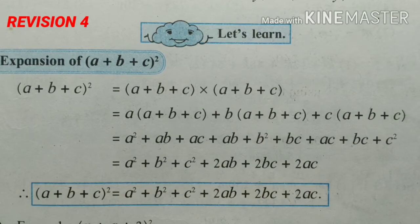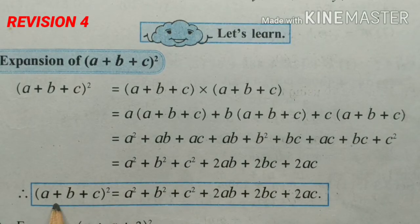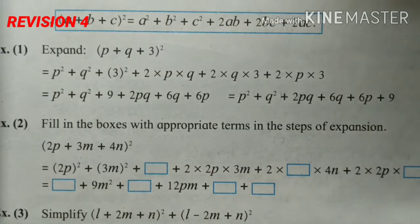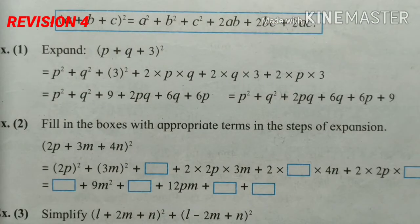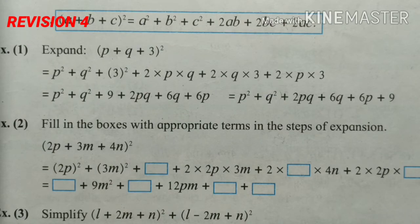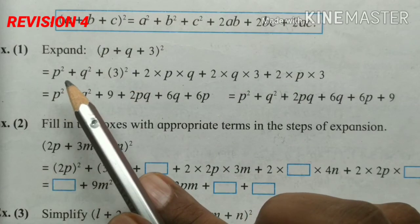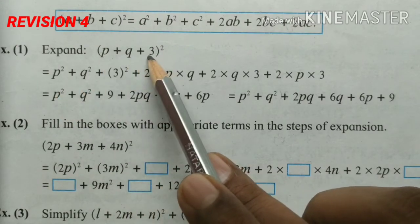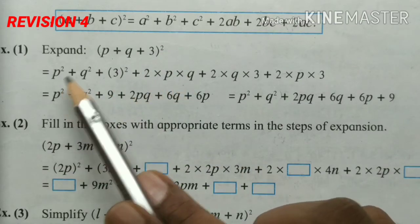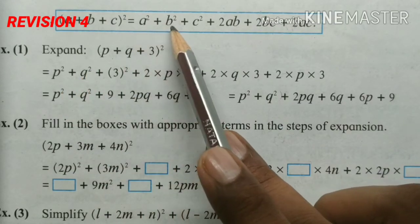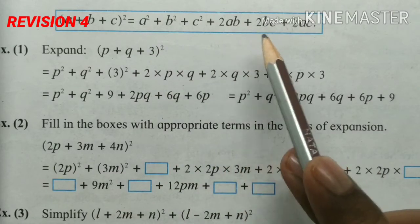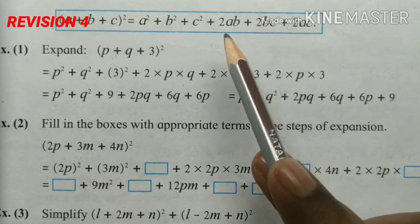Thus in this way we get the formula: expansion of (a + b + c) square. There are some formulas and examples solved in the book. In our video we solve some examples. Look at this example: solve (p + q + 3) square. How is it solved by using this formula? a square plus b square plus c square plus twice ab plus twice bc plus twice ac.